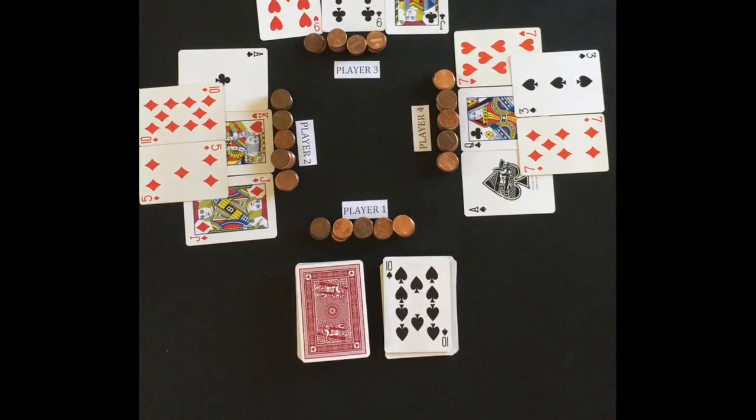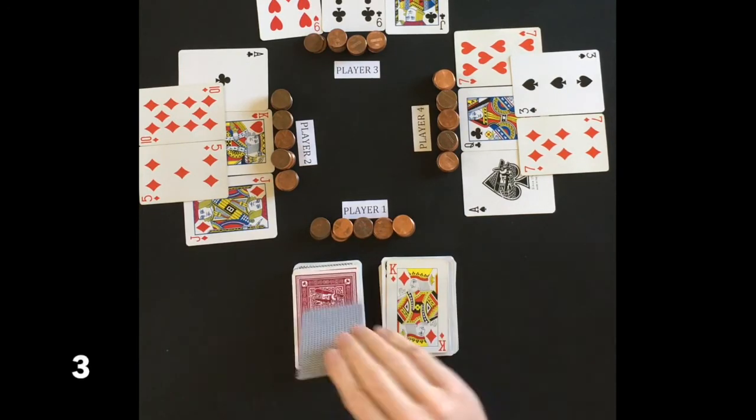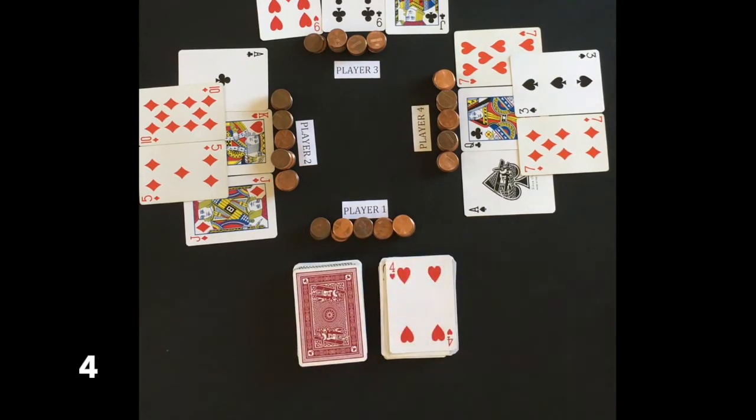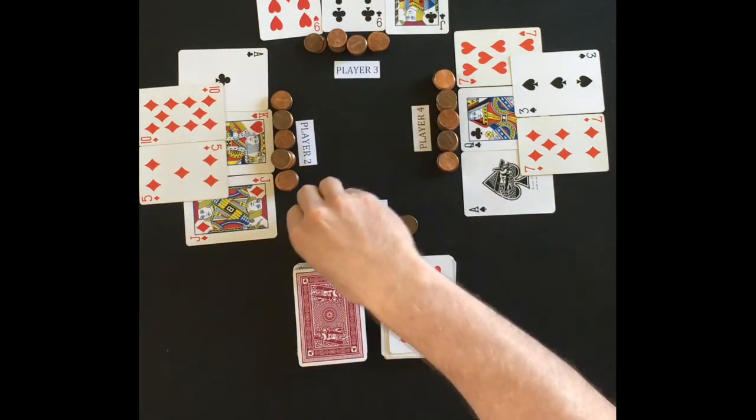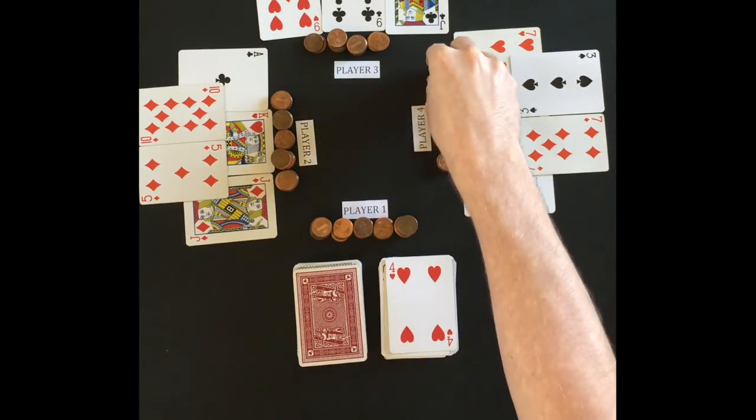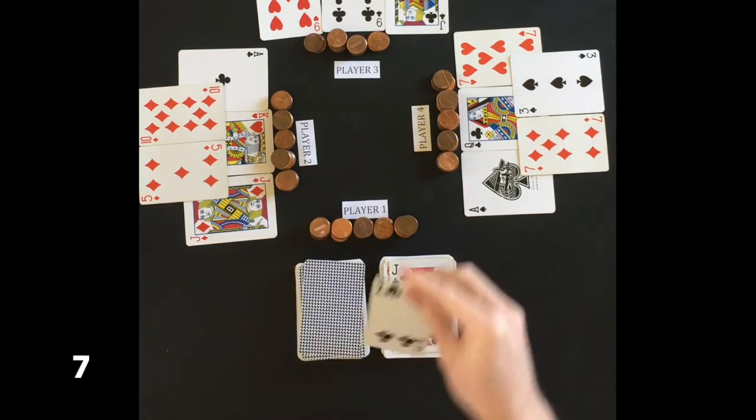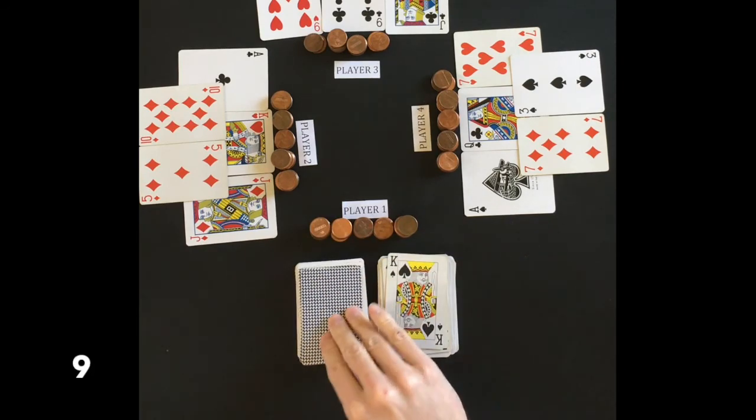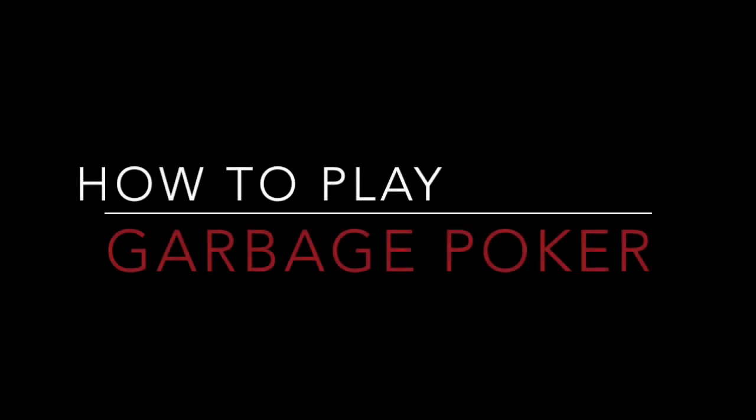The last stage of the round is the count. The dealer will flip over 10 cards while counting to 10. If any card matches the count number, every player pays the dealer that amount of pennies. When the dealer's 4th card flipped is a 4, each player pays the dealer 4 pennies. The aces count for the 1 and the face cards are not worth anything. The count stage ends the round and the deal moves to the next player to the left. That wraps up how to play garbage poker.